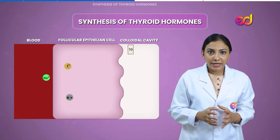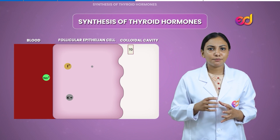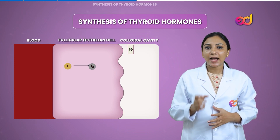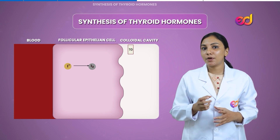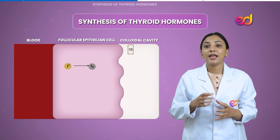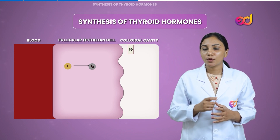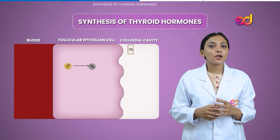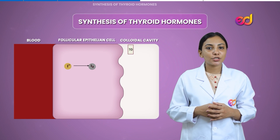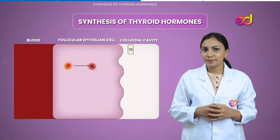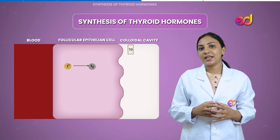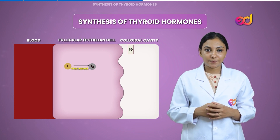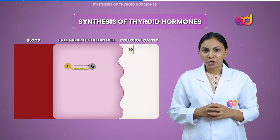Now iodide is in the follicular cells. The key point to keep in mind is that this iodide must be oxidized to iodine, since only iodine is capable of combining with tyrosine in the thyroglobulin to form thyroid hormones. What triggers this oxidation of iodide into iodine? It is accomplished with the help of thyroid peroxidase in the follicular cells.